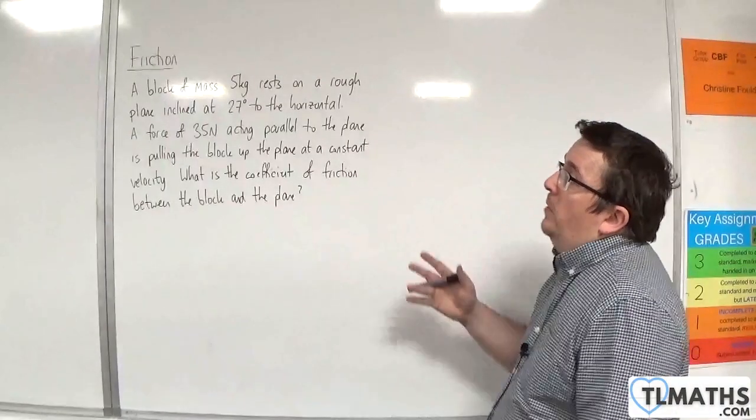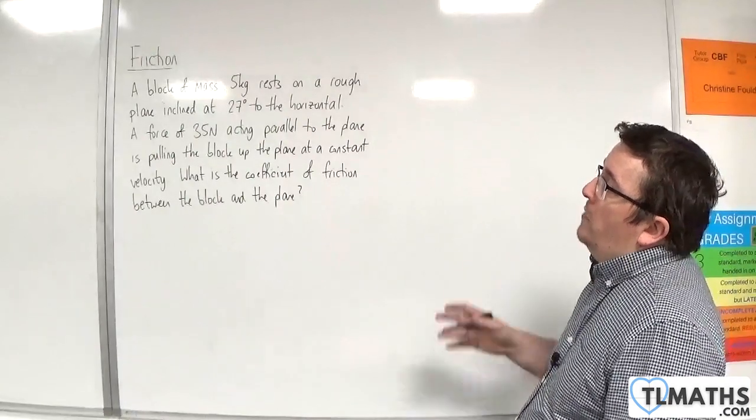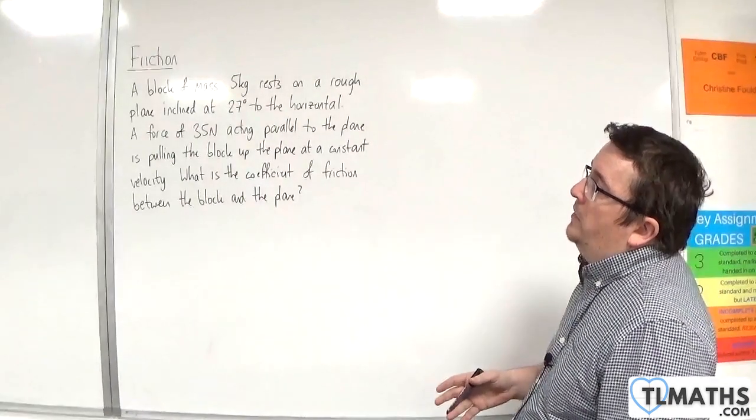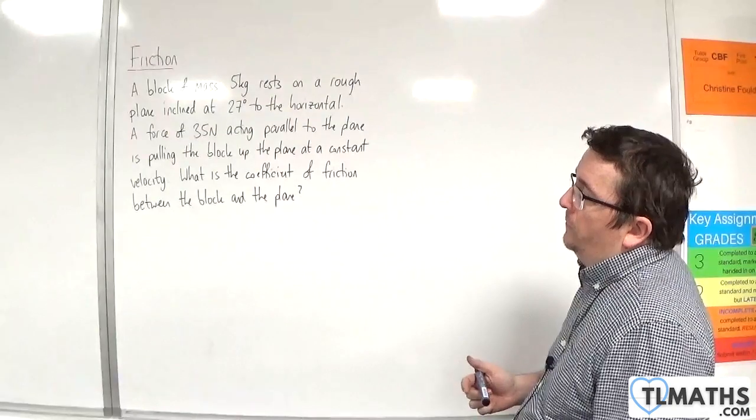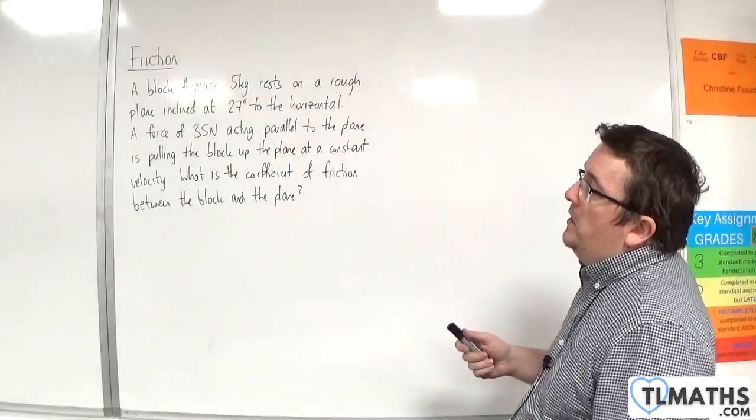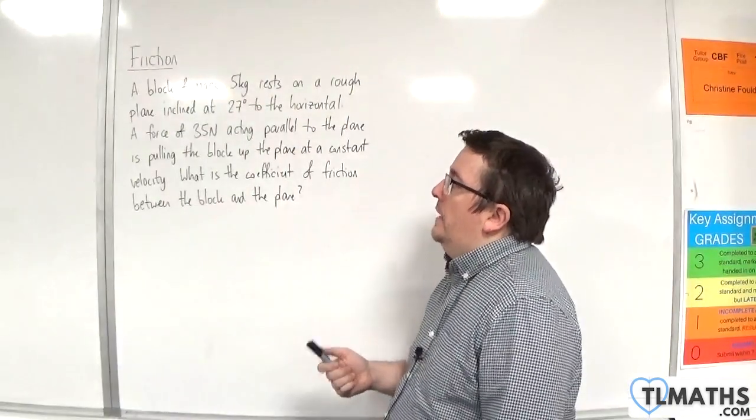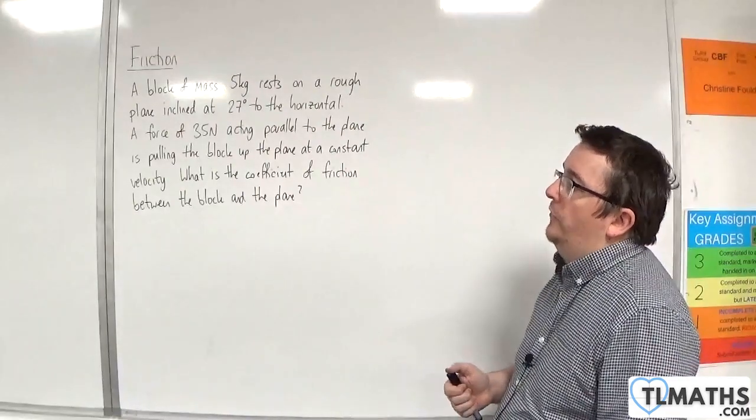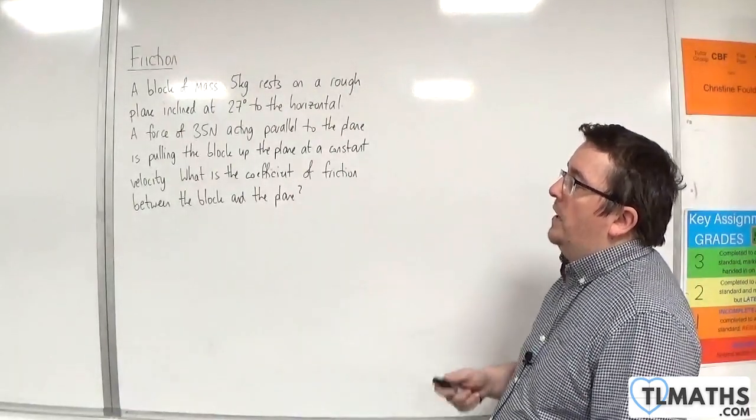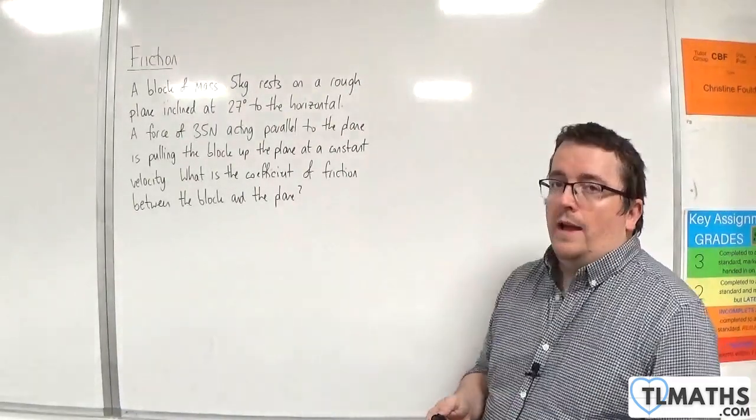In this video, we have a block of mass 5 kilos resting on a rough plane inclined at 27 degrees to the horizontal. A force of 35 newtons acting parallel to the plane is pulling the block up the plane at a constant velocity. What is the coefficient of friction between the block and the plane?